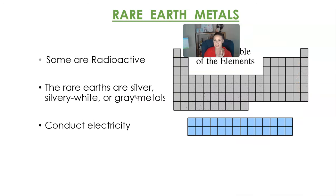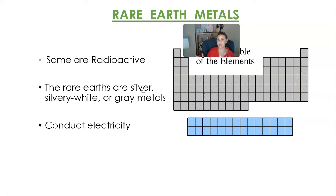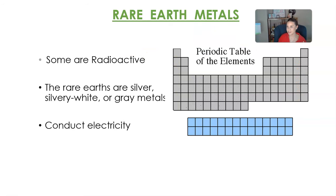Finally, the rare earth metals — some of which are reactive — are silvery white or gray and are decent conductors of electricity. That was a lot to cover about the different families and groups of the periodic table, so feel free to slow down and take notes. Reach out if you have any questions.